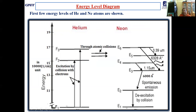Through atomic collision, helium excites neon atoms from the ground state to levels E4 and E6, which have energy values very close to F2 and F3. Neon atoms are excited to E4 and E6 but not to E3 and E5, so a sizable population is achieved at E6 and E4 rather than E3 and E5, achieving population inversion.